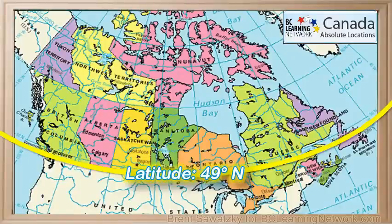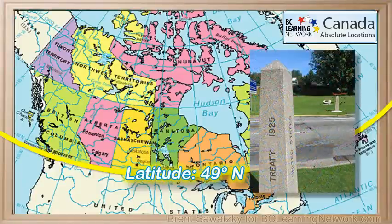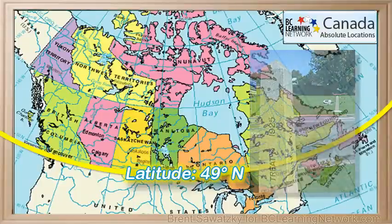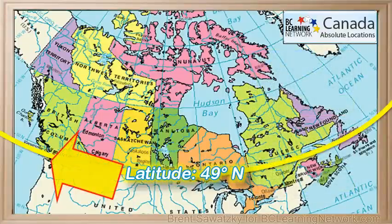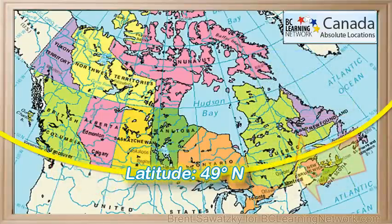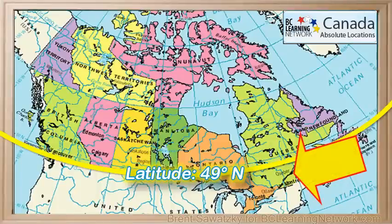When the border was designed it was meant to follow the 49th parallel right from BC through to Manitoba. You may have seen the boundary markers — they look like this. This one's in Surrey. You can see that Vancouver Island falls a bit below the 49th. And over here on the east side of Canada, well there's a bunch of Canada that falls below the 49th.